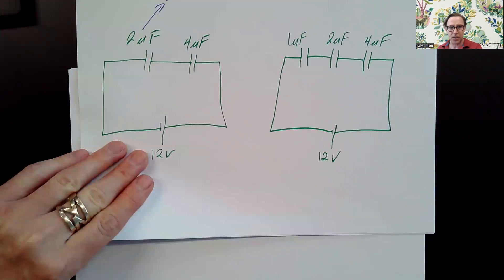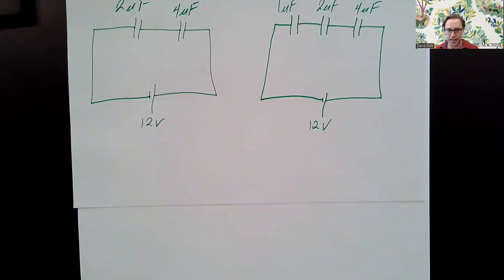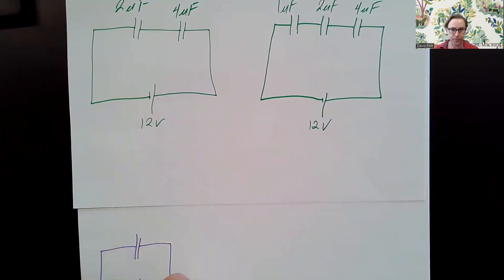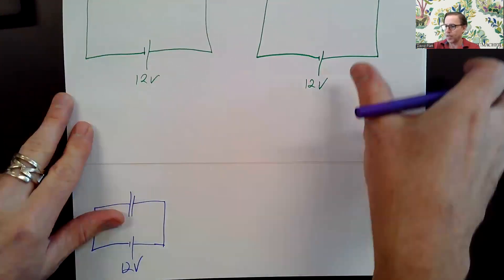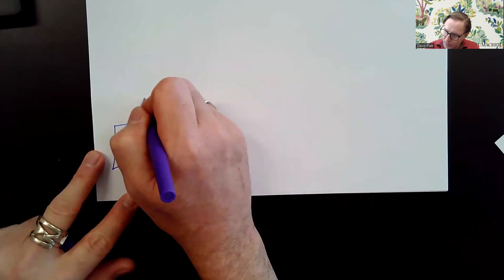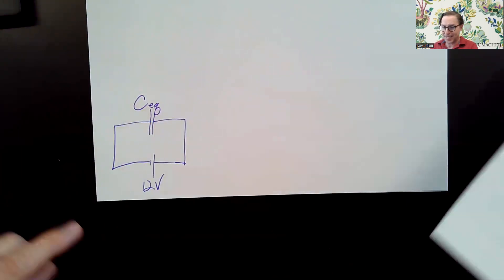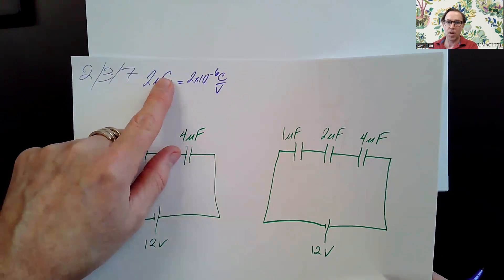The first thing I'm going to do is redraw this circuit right down here. I'm going to have a 12-volt battery, same battery, but instead of connecting it to those two capacitors, I'm going to connect it to this one equivalent capacitor. So that circuit has become this circuit. And I want to know what its capacitance is — I'm going to call that C sub EQ.